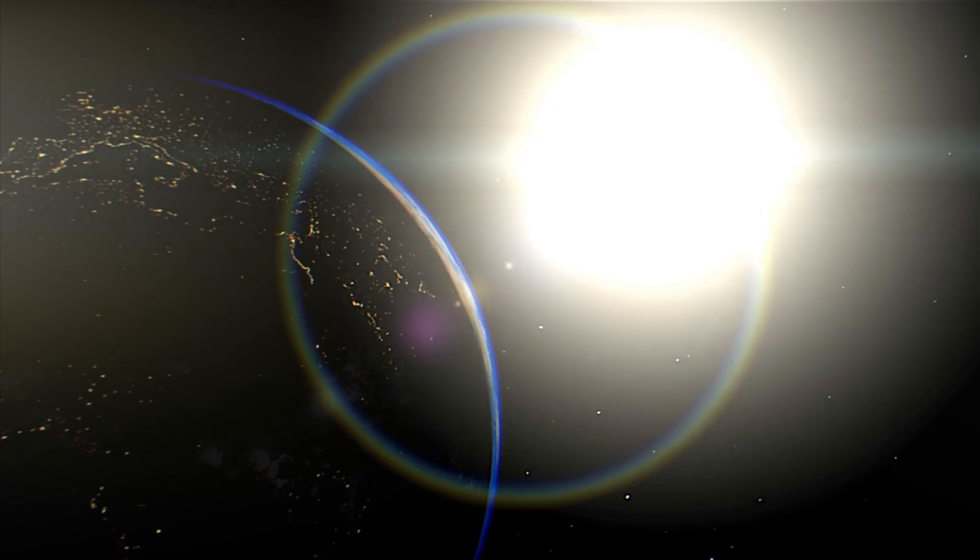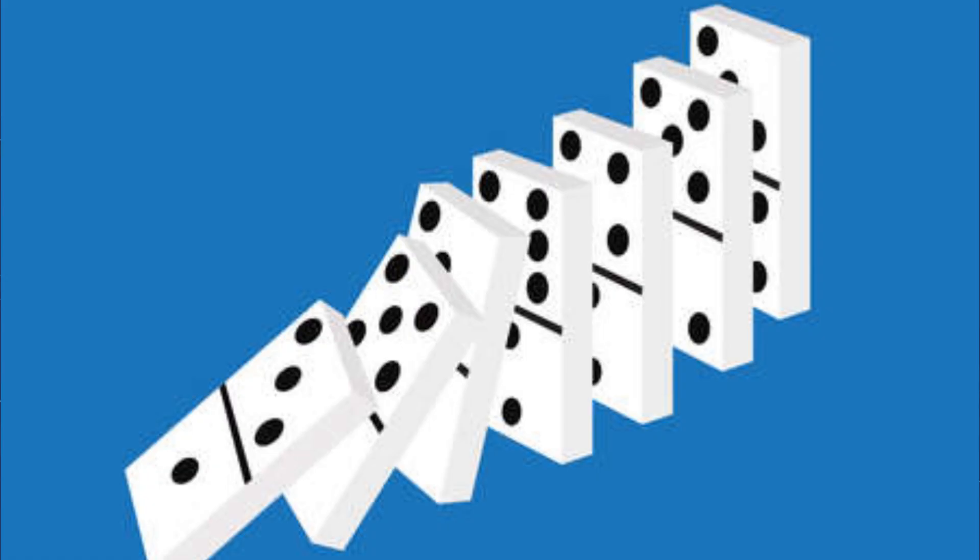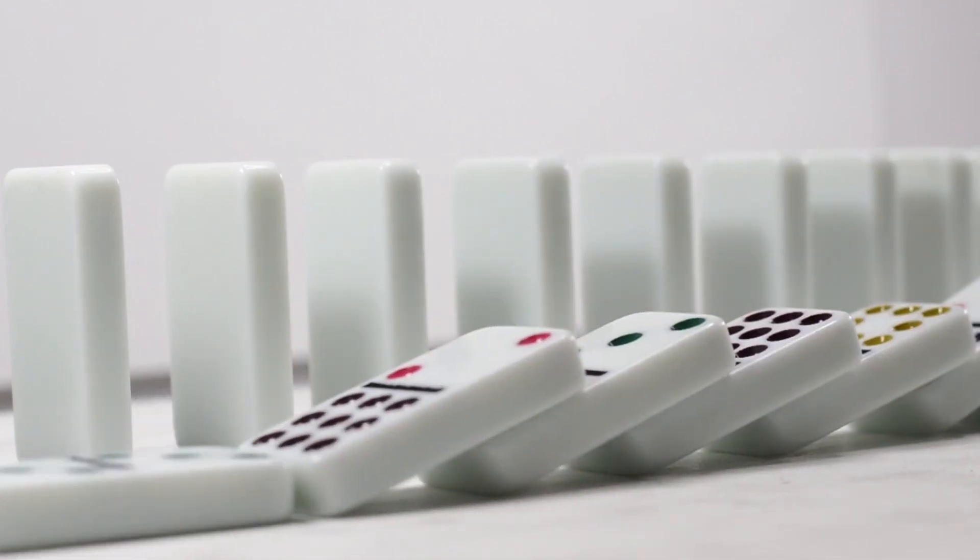If you choose to leave the dominoes be, then in a parallel universe your identical self will choose to knock them over. When all is said and done, only one event occurred in your universe, you choosing to ignore the dominoes. However, in the parallel universe, 11 events occurred, you knocking the dominoes over and each one of them falling.